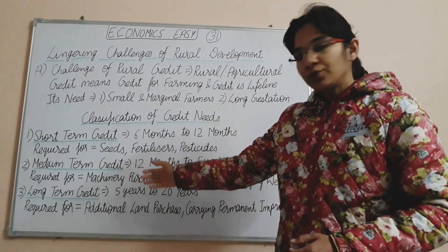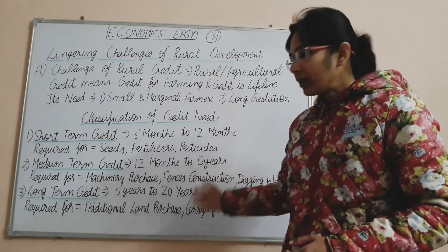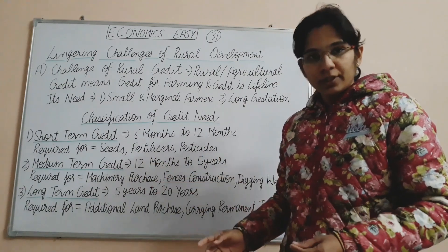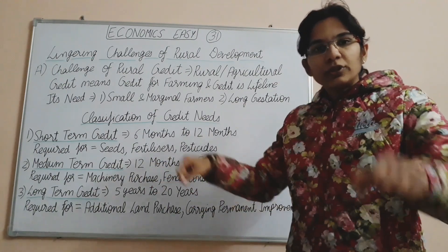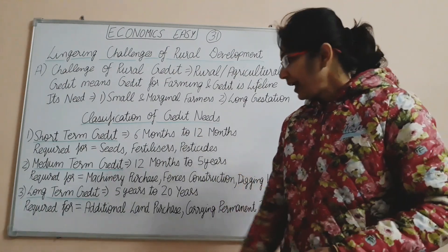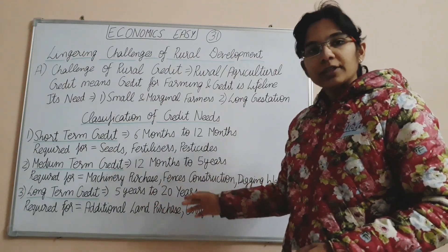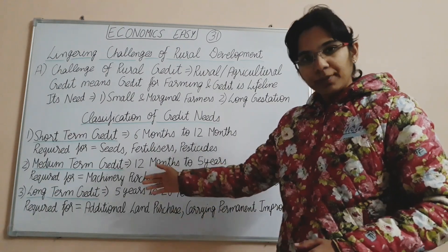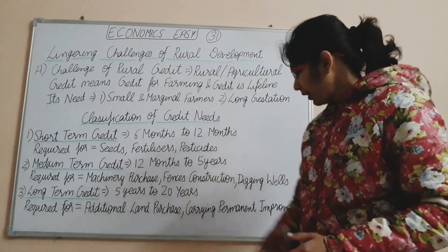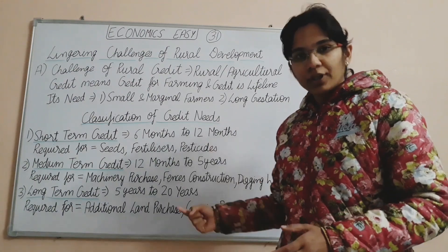Medium-term credit is required for machinery purchase, fences construction, and digging wells. Long-term credit spans five to twenty years. It is required for additional land purchase — if a farmer wants to buy more land — or for carrying out permanent improvements on existing land.